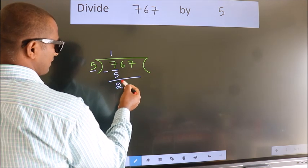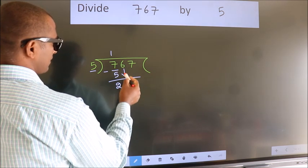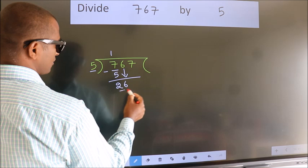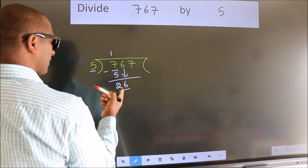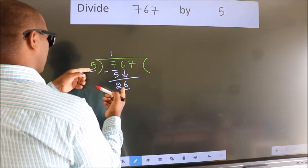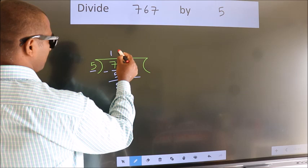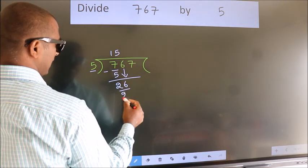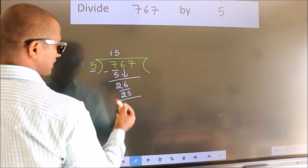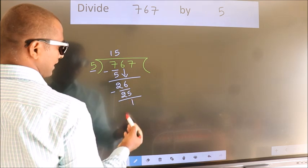After this, bring down the beside number. So 6 down, so 26. A number close to 26 in 5 table is 25, 5 times 5. Now we subtract. We get 1.